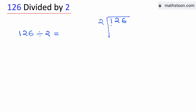As 1 is less than 2, we will consider the number 12. From the multiplication table of 2, we know that 2 times 6 is 12. Subtract, we get 0.